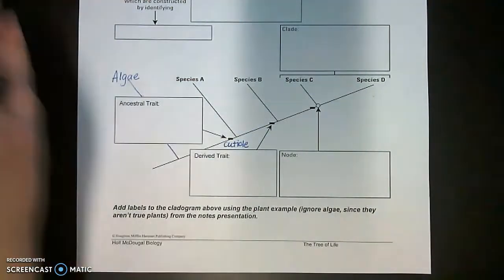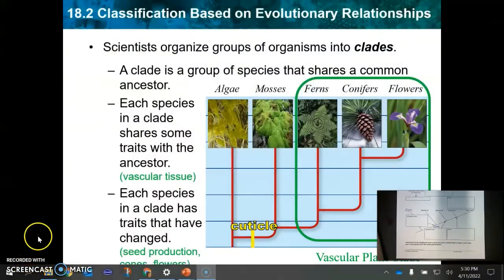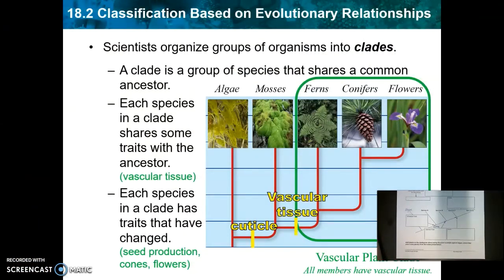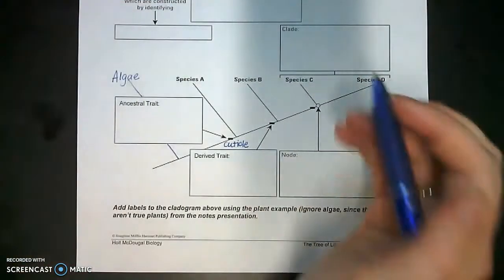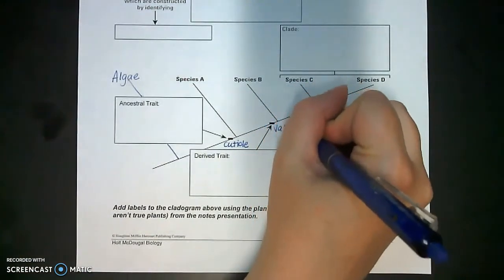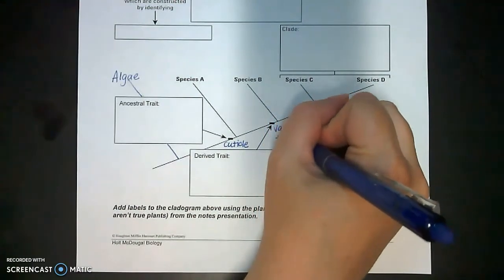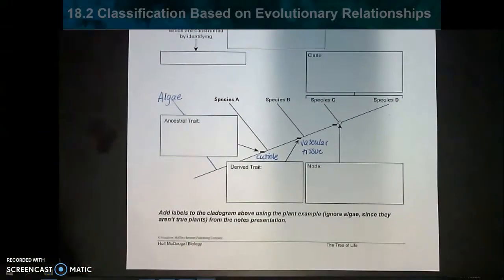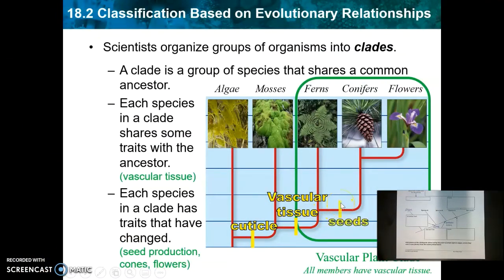After cuticle, the next trait is vascular tissue — we already know that one because we've talked about this as the vascular plant clade. This ancestor had vascular tissue and passed it down to all of its descendants, so on your cladogram, vascular tissue goes here. And then after vascular tissue, within this clade, we have the appearance of seeds. Conifers and flowers have seeds, but ferns do not, so we can add seeds to the cladogram.